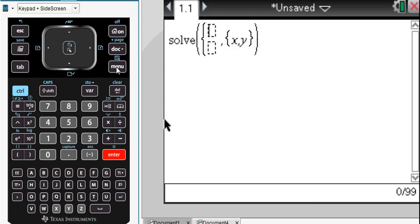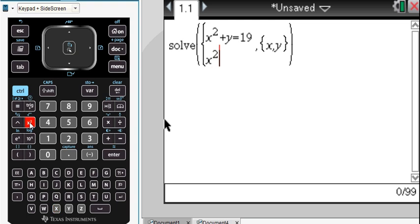How many equations? Let's do two. Let's do x squared plus y equals 19, and the other one will be x squared plus y squared equals 25.